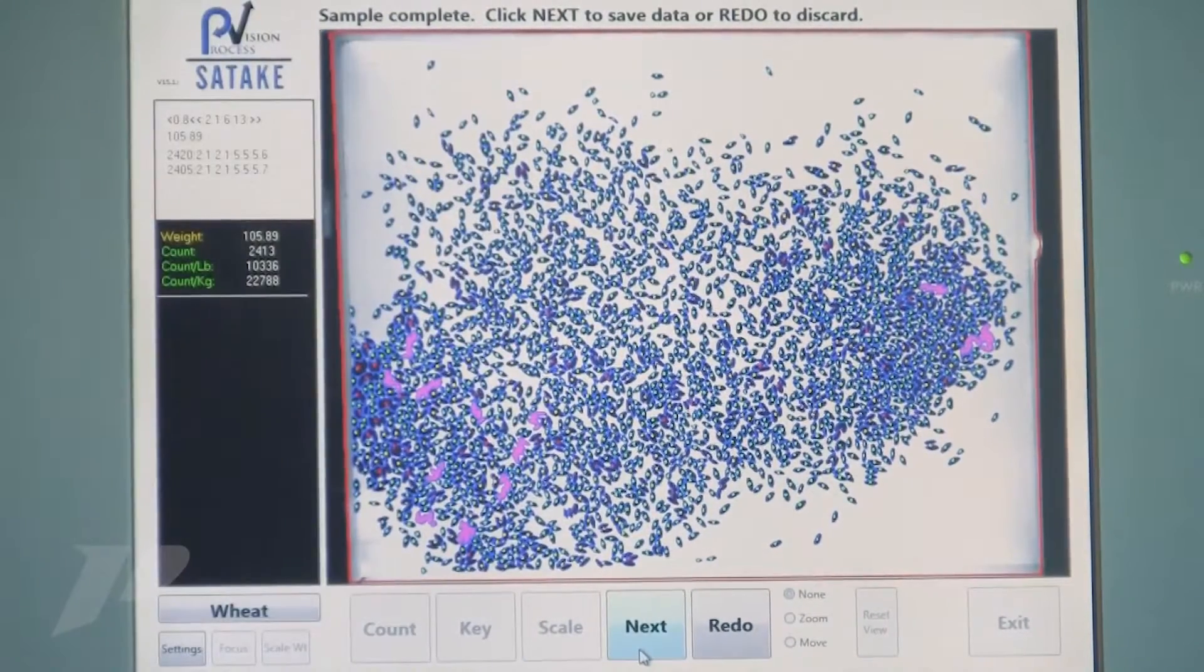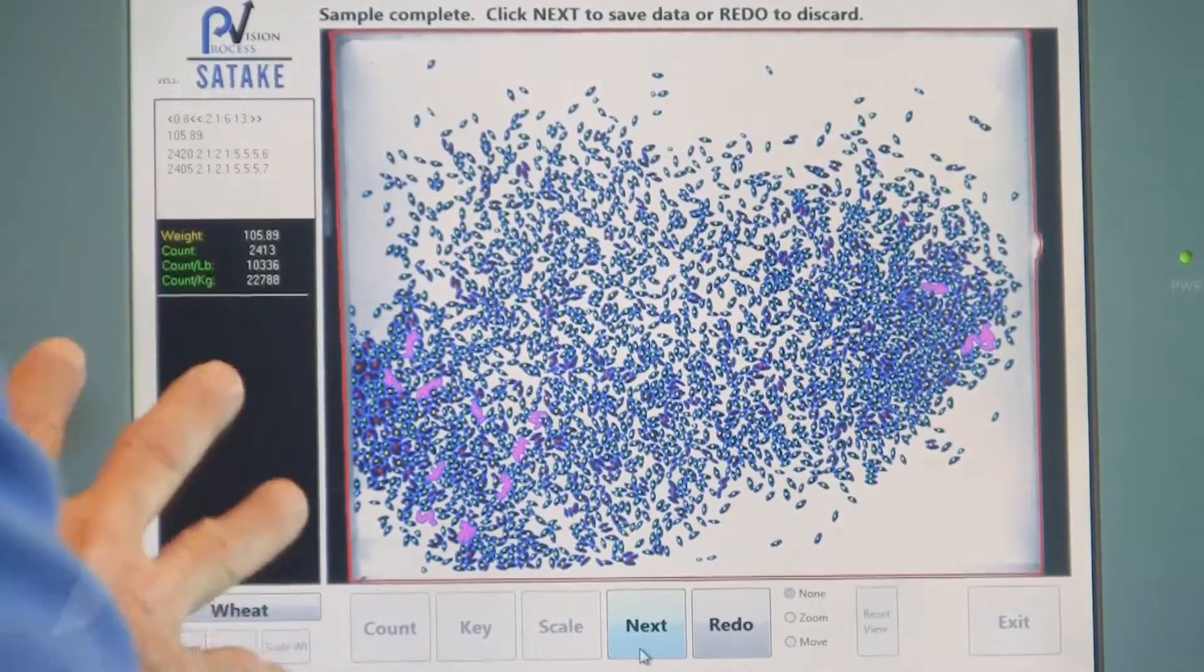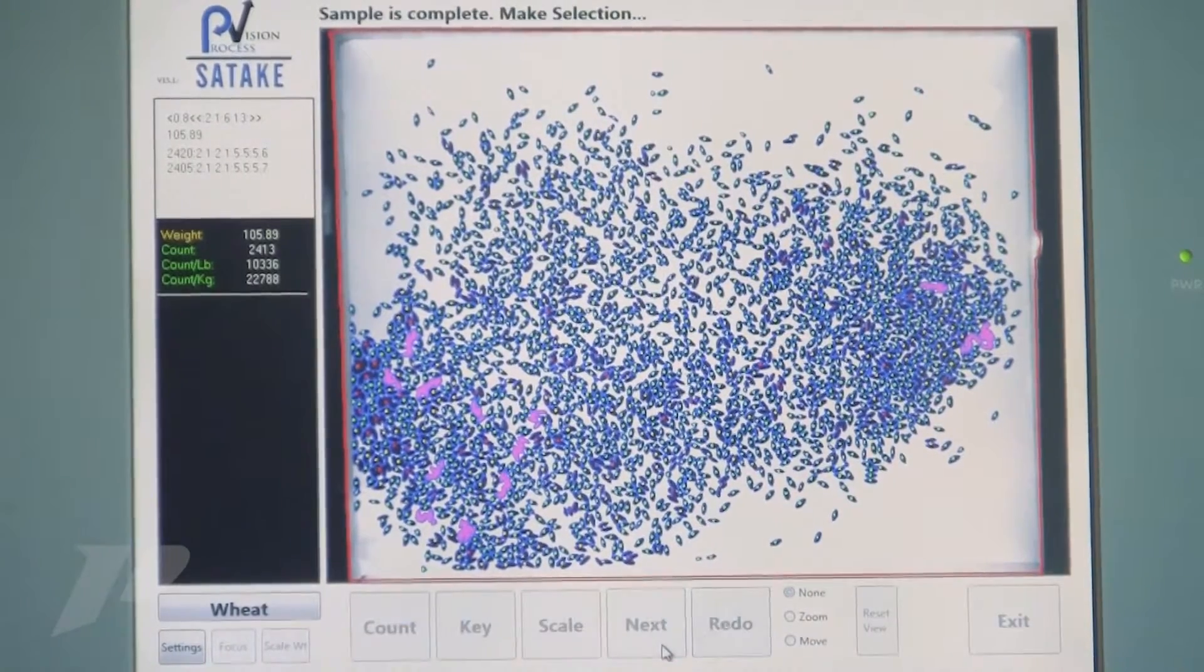We're within plus or minus seven and a half, which is close enough for the settings we have here. So we will accept that product. We'll say next.